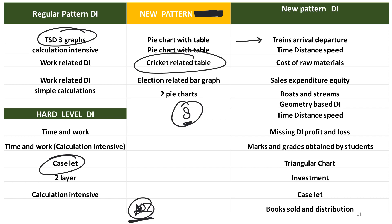What can also be expected is something to do with train arrival departments. So you might get a DI based on train arrival time. You might get a DI based on the cost of raw materials, so there will be a manufacturing-related graph of a company — basically a profit and loss setup — where you will have to calculate costing, cost per unit, and mix in the numbers to do that. Sales and expenditure and equity can also come.